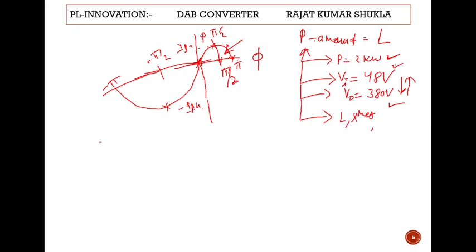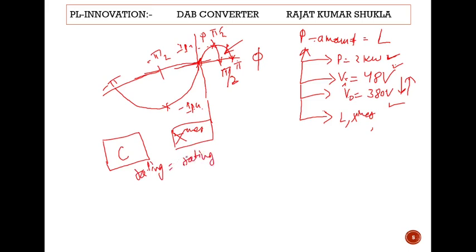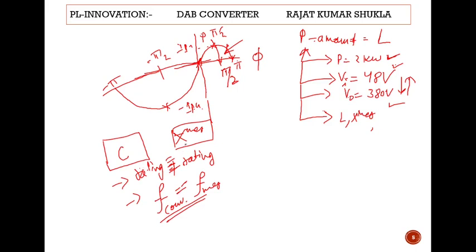Before designing, remember: if you are using a transformer in the dual-active bridge converter, the rating should be equal to or more than the converter rating, for protection purposes. But the frequency of the converter circuit and the transformer frequency — that should be the same. This is a very important point because students often make this kind of error. Converter frequency and transformer frequency must be the same.